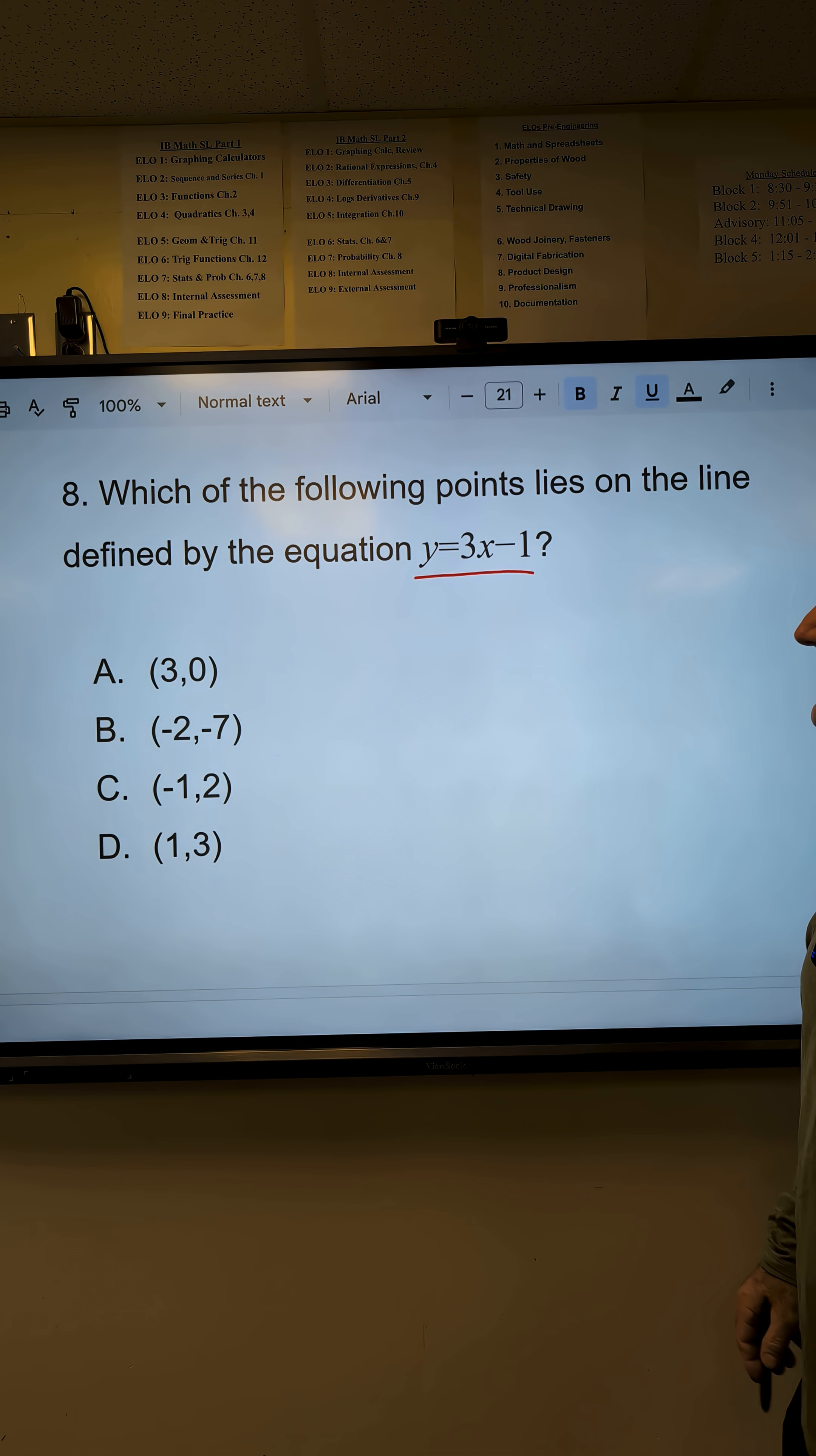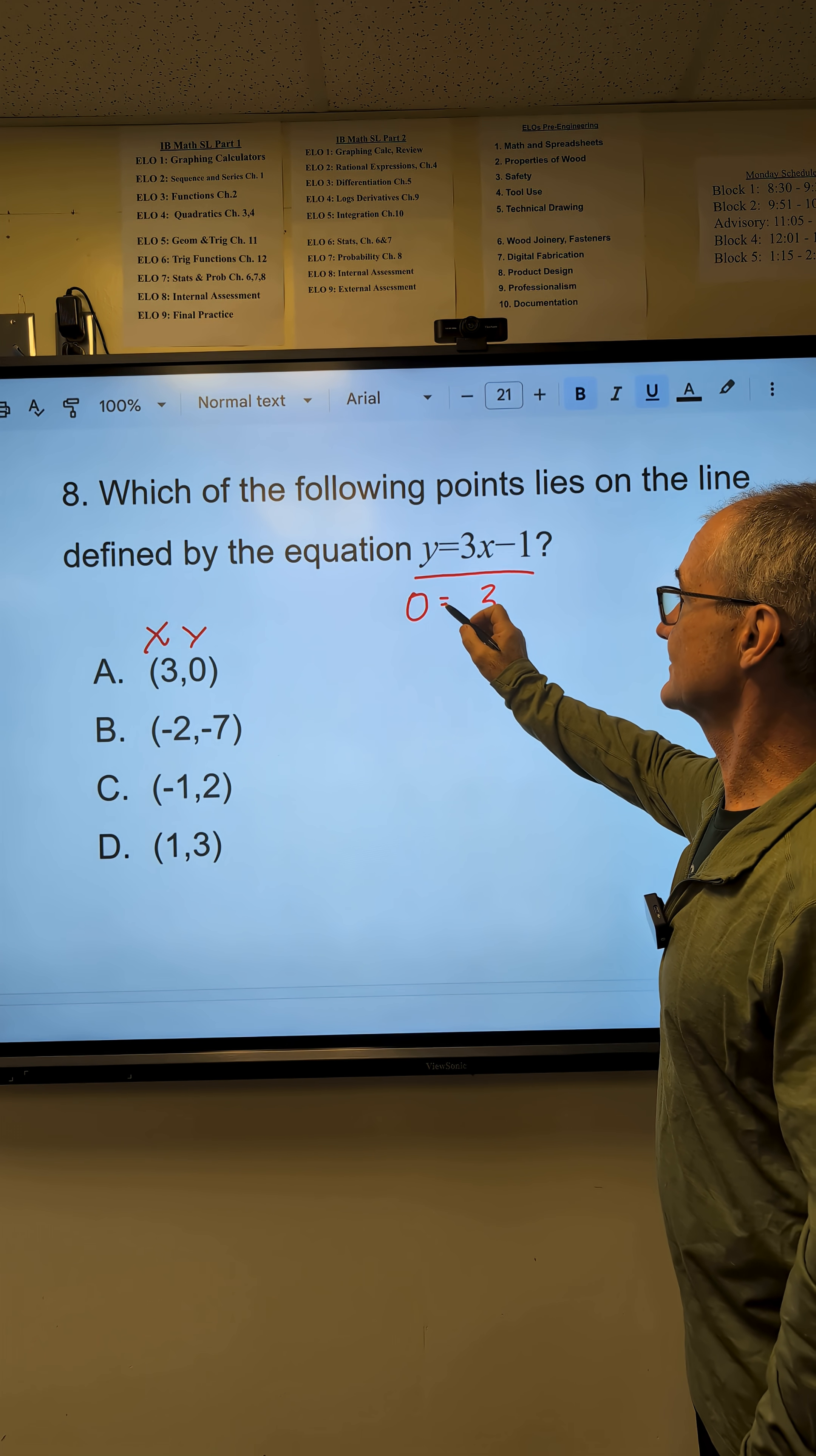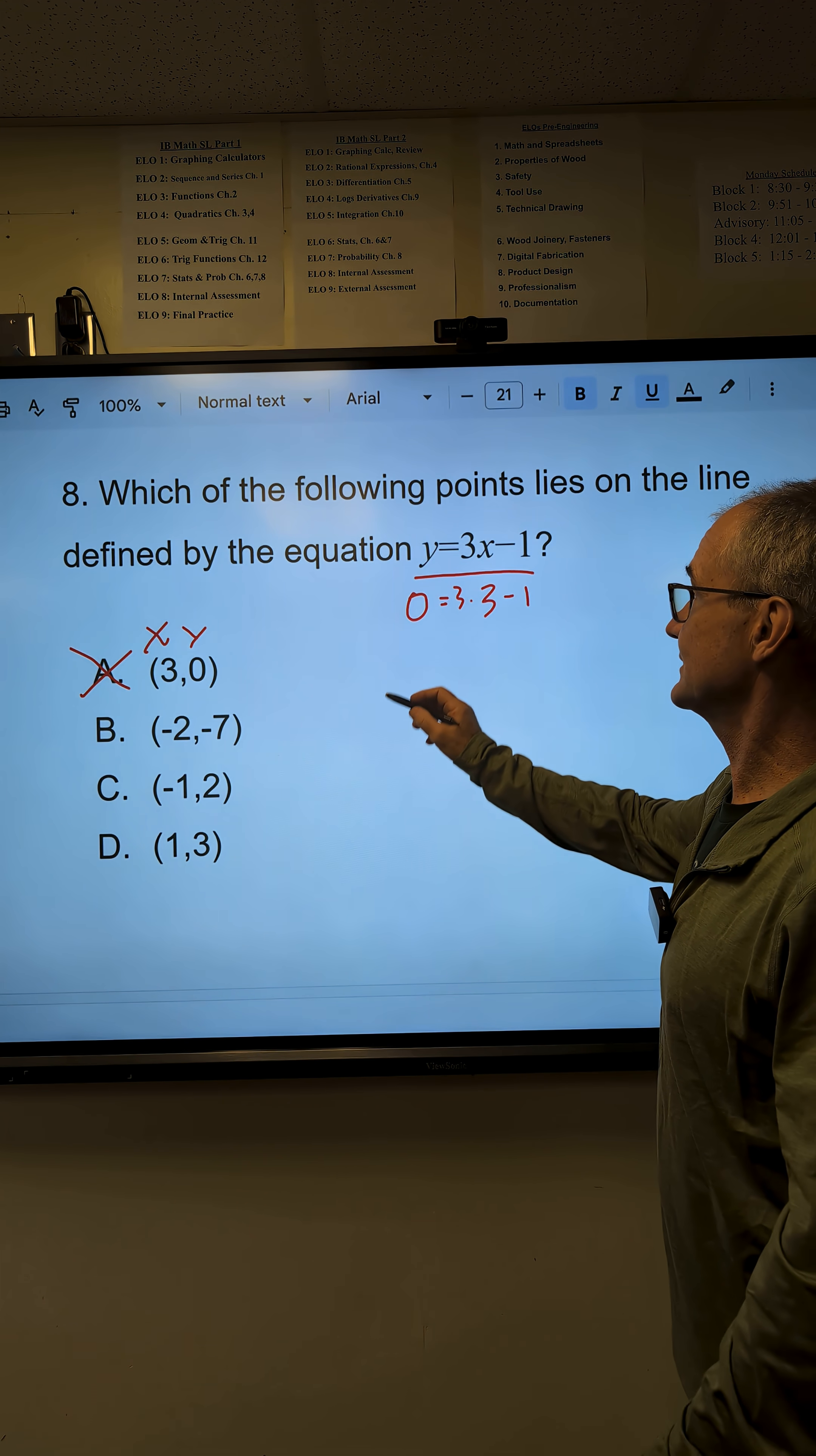Best way to do this one is take those values, plug it in. X is always first, then Y. I'll take 3, plug it in there, and that should be equal to Y, which is 0. 3 times 3 minus 1. 9 minus 1 is not 0. Try the next point.